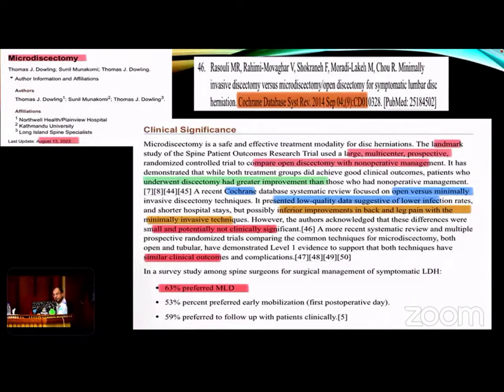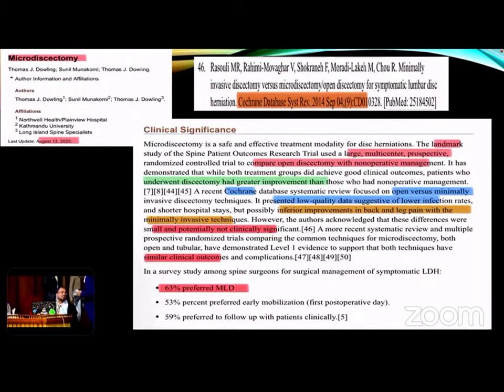After we diagnose our patients with lumbar disc prolapse and give them the best chance of medical treatment and decide to go through surgery, we will think about the approach to achieve our mission. Some will think about conventional open surgery; others will choose minimal invasive intervention, either microscopic or endoscopic. We will not go much into comparison between conventional open and minimal invasive intervention, because it is already more preferable for most spine surgeons to use minimal invasive than open.